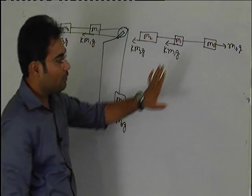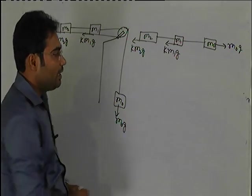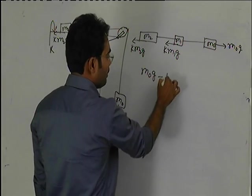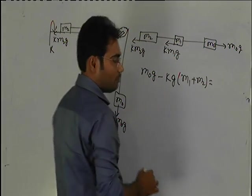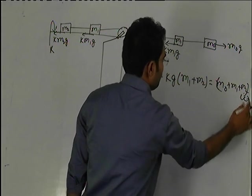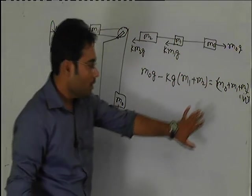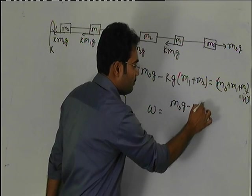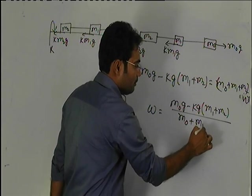Right towards total force M0G, left towards total force KM2G plus KM1G, this acceleration rightward acceleration. M0G minus KG(M1 plus M2) equals total mass into acceleration, M0 plus M1 plus M2 into W. Suppose that W be the acceleration of the system. It means W value is M0G minus KG(M1 plus M2) by M0 plus M1 plus M2.